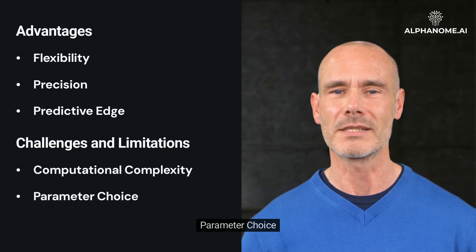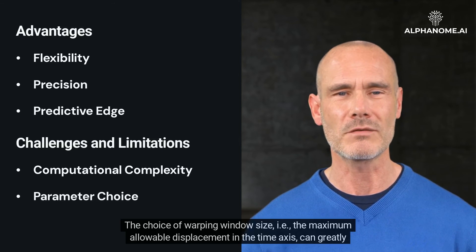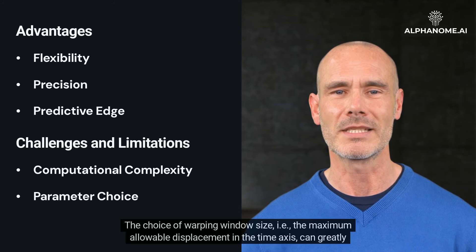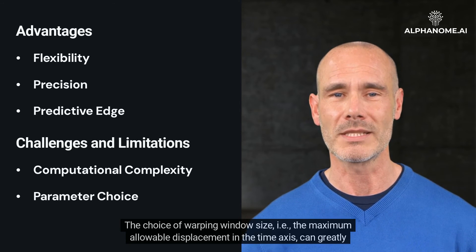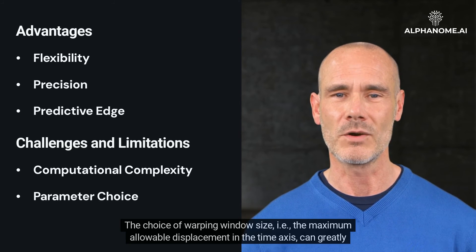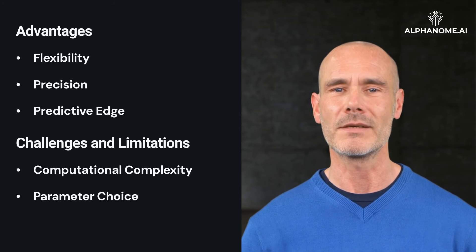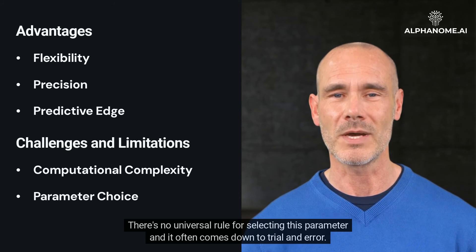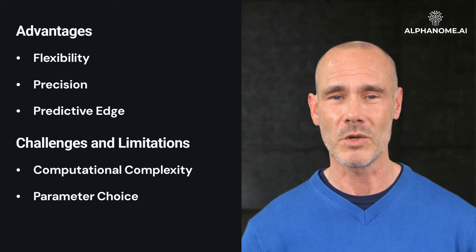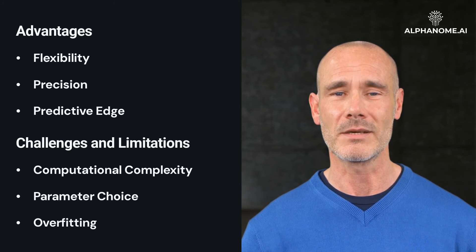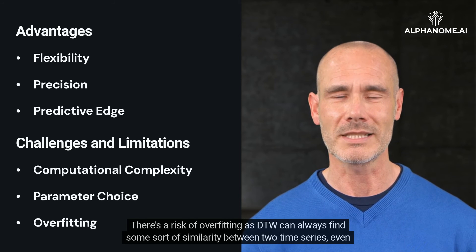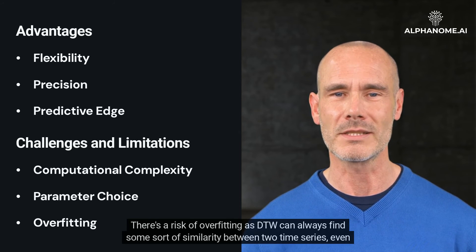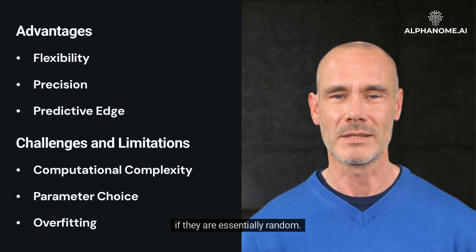Regarding parameter choice, the choice of warping window size — the maximum allowable displacement in the time axis — can greatly influence the results. There is no universal rule for selecting this parameter and it often comes down to trial and error. Additionally, there is a risk of overfitting, as DTW can always find some sort of similarity between two time series, even if they are essentially random.